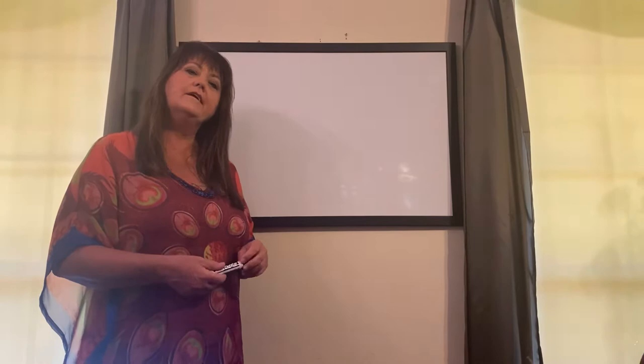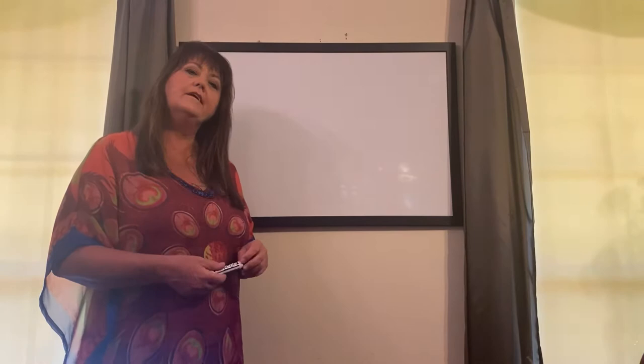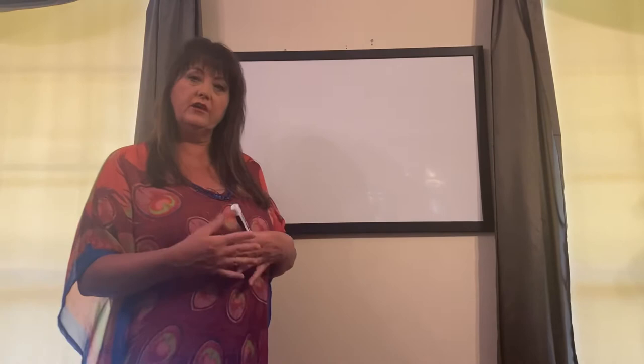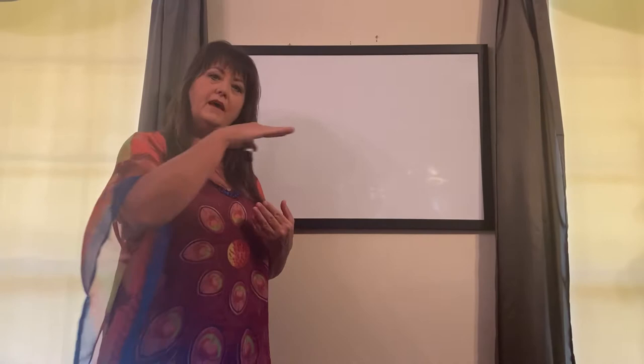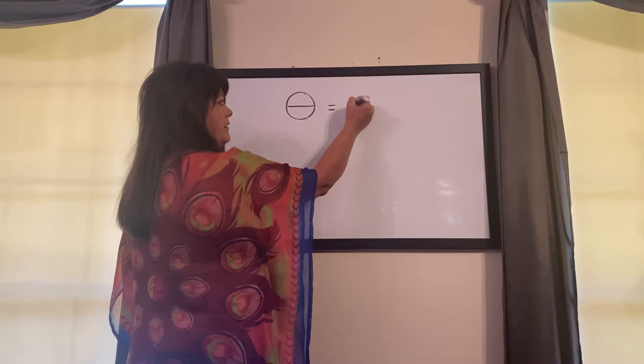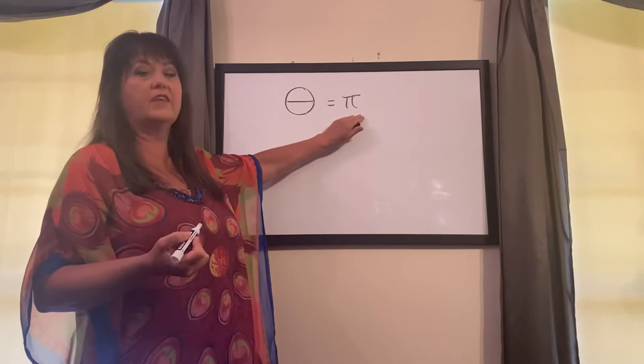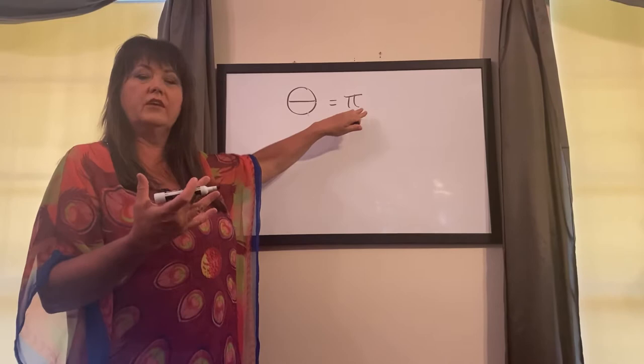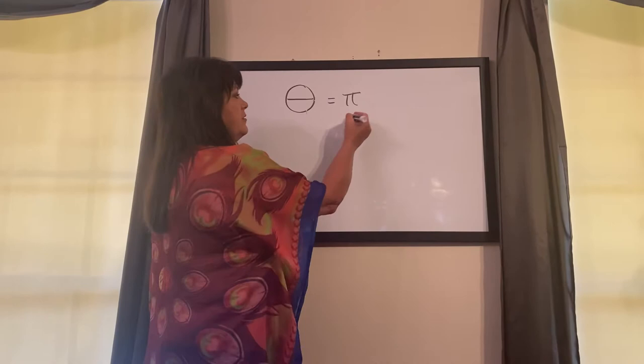You learned last year that pi is a constant ratio and that it comes from the circumference of a circle divided by the diameter. If you take the circumference of the circle divided by the diameter, you're going to get pi. You learned last year that using the exact form of pi is the only way to get the exact answer. The other methods that we use are going to be approximations.